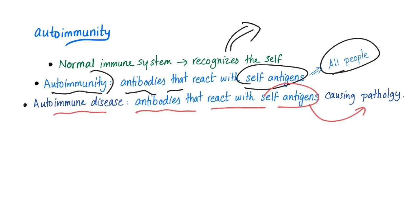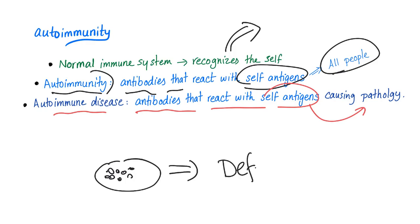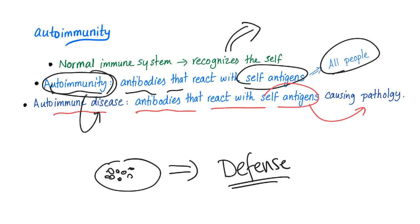It's similar to eating food that's contaminated with bacteria. Does that mean that every single patient will get a disease? The answer is no. Your body has an amazing defense mechanism, and hopefully you will not get sick. Some people will get sick, but the majority will not. Similarly, every single person has autoimmunity, but only the minority of people have autoimmune diseases.